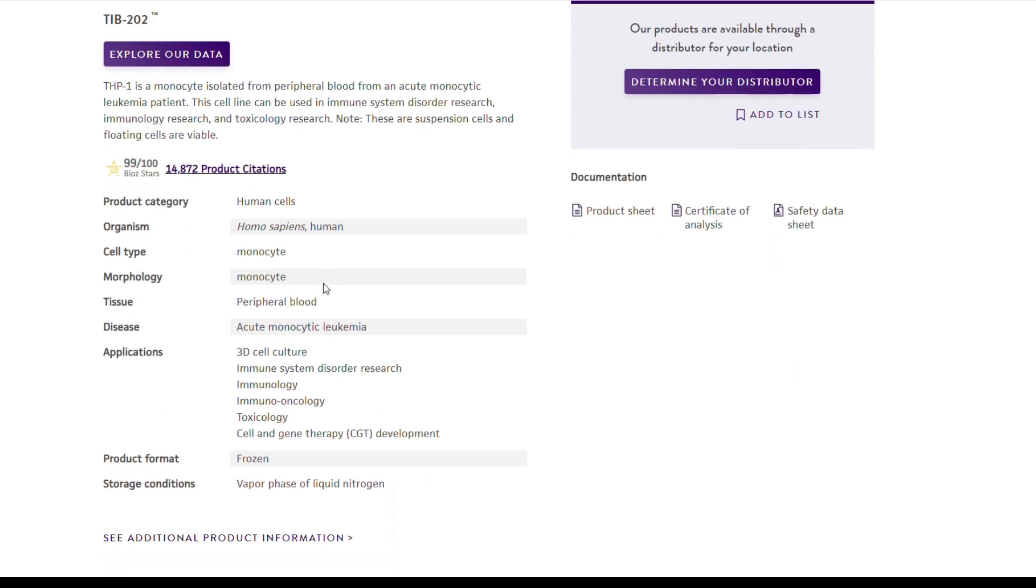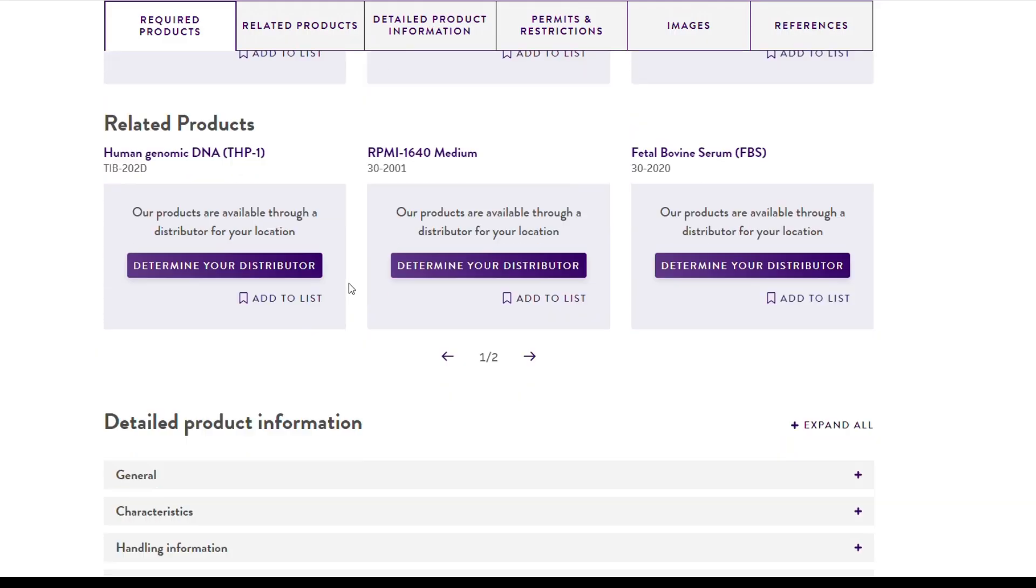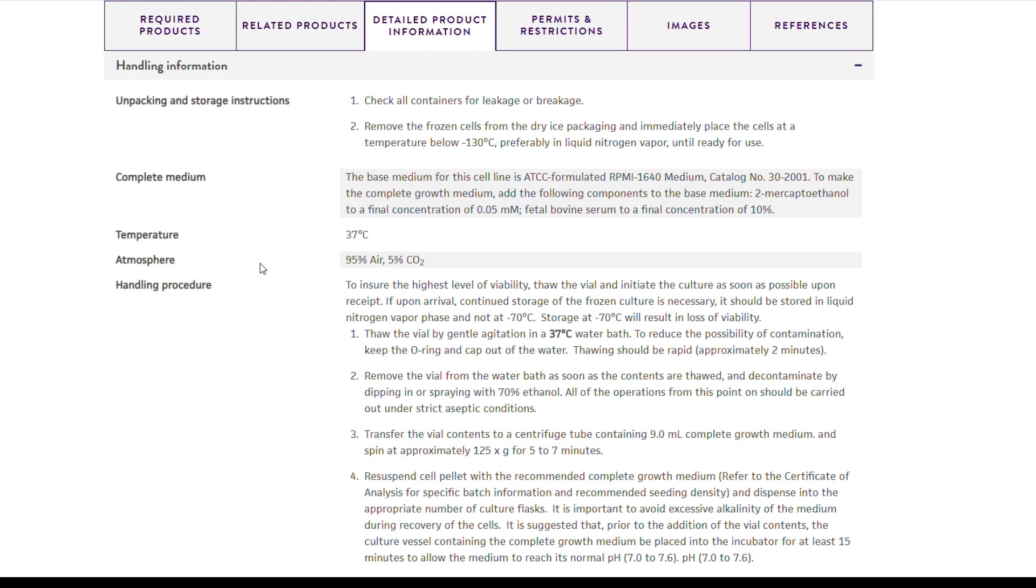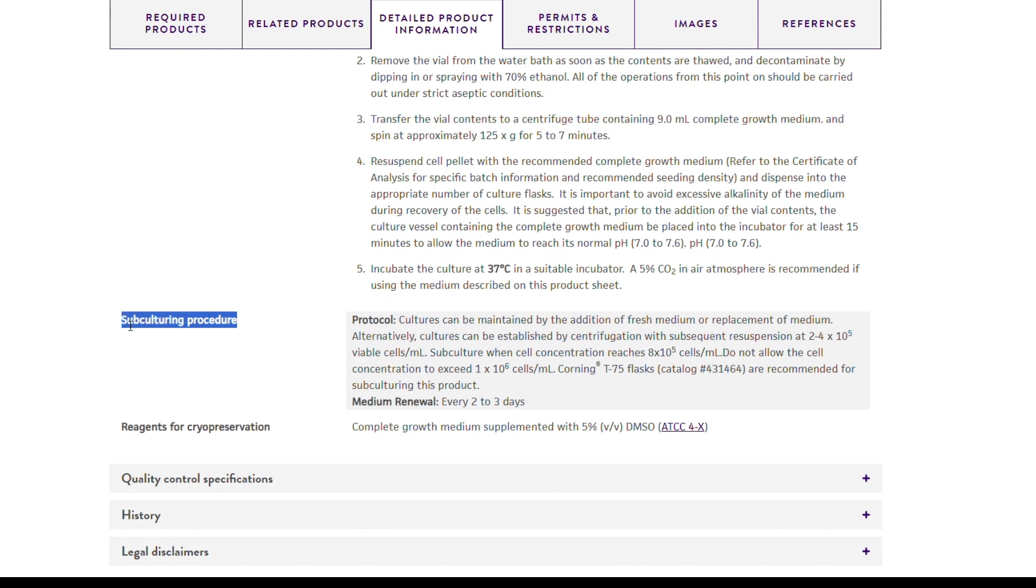You can see here under subculturing that it tells you that you should subculture when cell concentration reaches 8 times 10 to the 5 cells per mil. It also says do not allow the cell concentration to exceed 1 times 10 to the 6 cells per mil. The instructions say you should subculture at 2 to 4 times 10 to the 5 cells per mil. Let's go through what this would look like in real life with this cell type as an example.